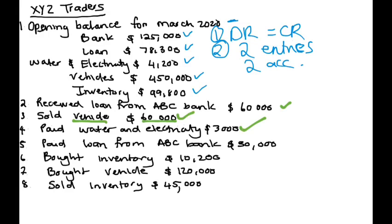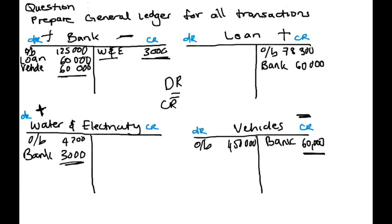Next question. We move on to paid loan from ABC Bank, $30,000. So we paid the loan off, $30,000. When we paid the loan, money left the bank — so we will credit the bank. And then we will debit the loan account, because we have less debts, less liabilities — we paid off our debts. So we paid $30,000 through the bank and we will debit that loan account.